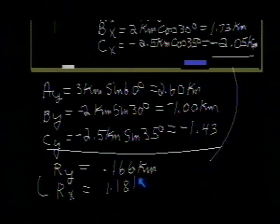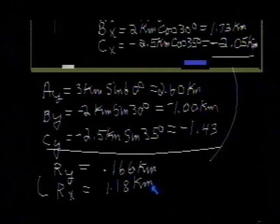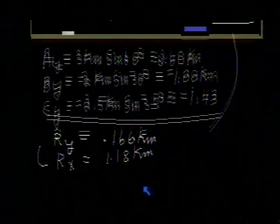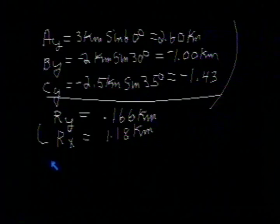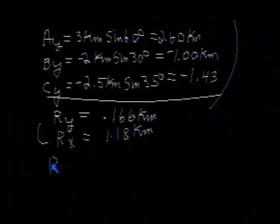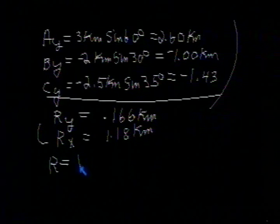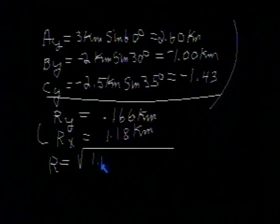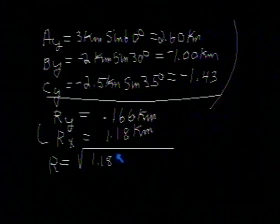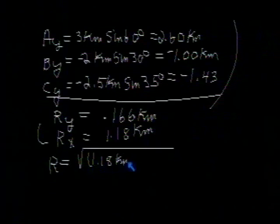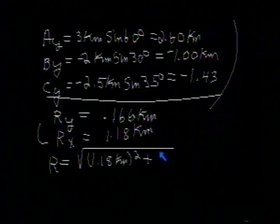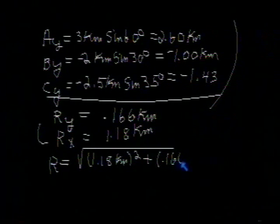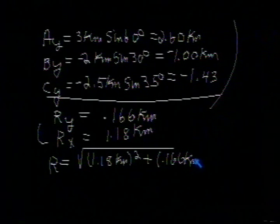Now, to find our resultant magnitude, we use the Pythagorean theorem so that the magnitude of R is the square root of our x component squared, 1.18 kilometers, that quantity squared, plus our y component, 0.166 kilometers, that quantity squared. And if you work this out, this comes out to be 1.19 kilometers for our magnitude.